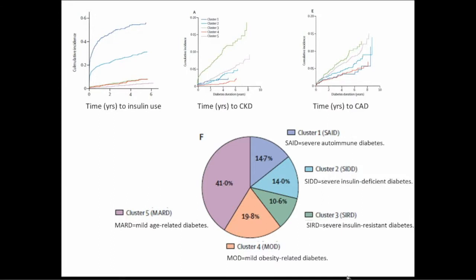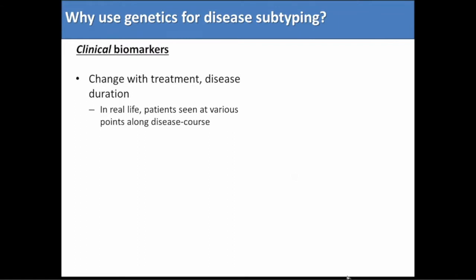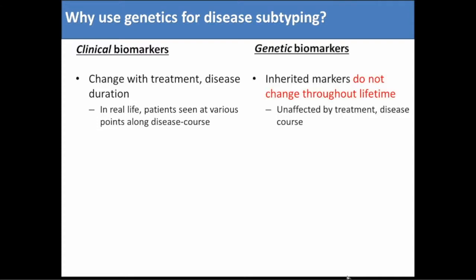The five clusters were: a severe autoimmune form (probably type 1), a severe insulin-deficient form, a severe insulin-resistant form, a mild obesity-related form, and a mild age-related form. They showed these categorizations mattered for differences between groups in time to insulin use, time to chronic kidney disease, and coronary artery disease. Limitations include that all patients had variables measured right at diagnosis, but in real life we see patients at various points in their disease course, and some measurements like BMI and hemoglobin A1C change with time. With genetics, the biomarkers don't change — you can measure them anytime, unaffected by treatment.